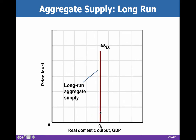In the long run, the aggregate supply curve is vertical at the quantity of full employment. At the full employment quantity of production, that's where our long-run aggregate supply curve will be. In the short run, we can produce a little bit above or below full employment. If we're way above, we get demand-pull inflation because everybody has so much money; if we're below, we're heading toward recession. The long-run aggregate supply curve will always, definitionally, be vertical at the full employment quantity of production.